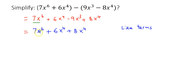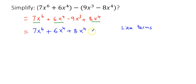We have 7x to the 6th, then 6x to the 4th and 8x to the 4th grouped together, and then minus 9x cubed as the last term.